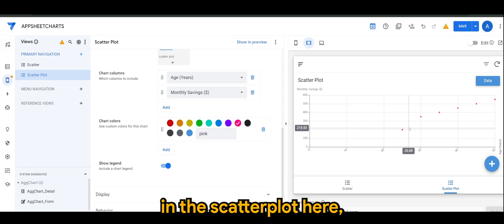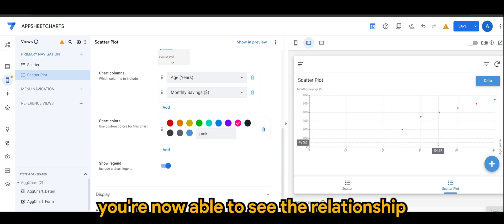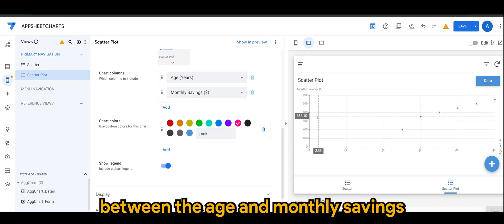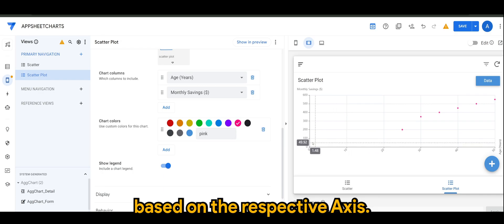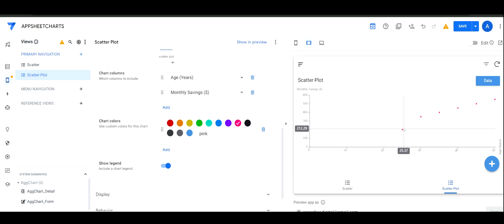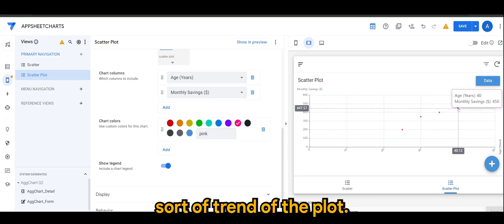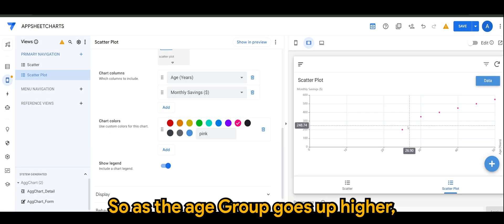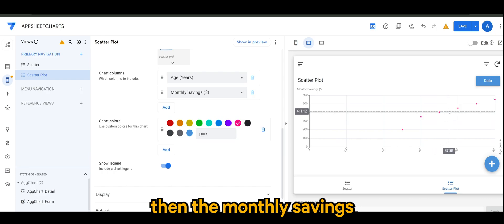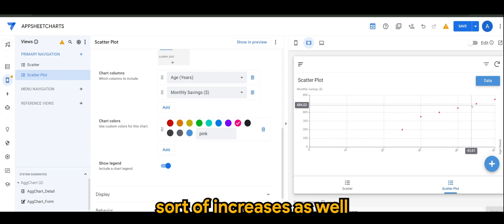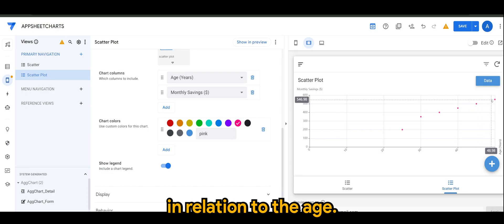Alright, so as you can see in the scatter plot here, you're now able to see the relationship between the age and monthly savings based on the respective axis. And now you can actually see the trend of the plot. As the age group goes up higher, the monthly savings sort of increases as well in relation to the age.